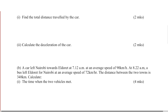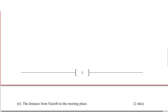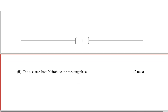Calculate the deceleration of the car. Question 2: A car left Nairobi towards Eldoret at 7:12 AM at an average speed of 90 km per hour. At 8:22 AM, a bus left Eldoret for Nairobi at an average speed of 72 km per hour. The distance between the two towns is 348 km. Calculate the time when the two vehicles met, and the distance from Nairobi to the meeting place.